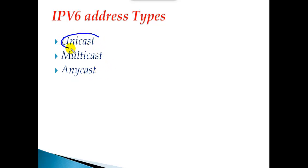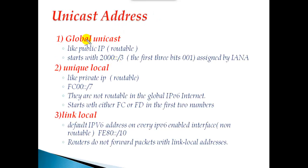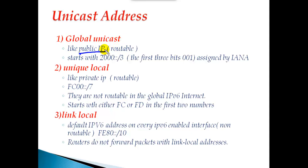Starting with the unicast category, inside unicast we have three sub-categories: global unicast address, unique local address, and link local address. The global unicast address is more like your public IP address — a globally unique IPv6 address that can be assigned to any device in the network, recognized on the internet.